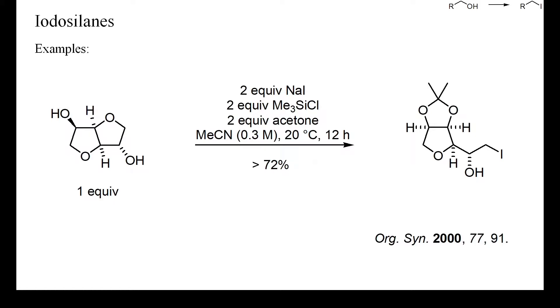As shown in the example on this slide, ethers can also be converted to alkyl iodides with the silane-iodide mixture. The fact that the secondary alcohol was not converted into an iodide suggests that this reaction is responsive to steric effects and will proceed much faster at primary than at secondary C-O bonds.